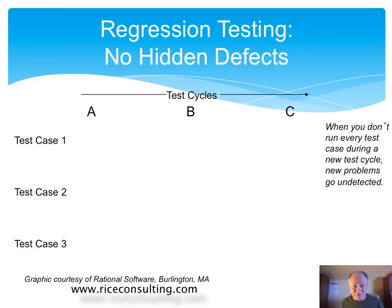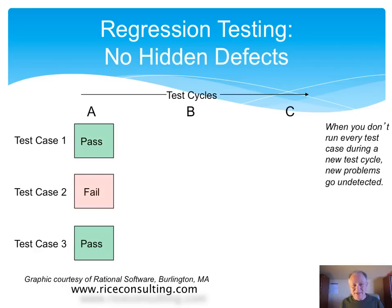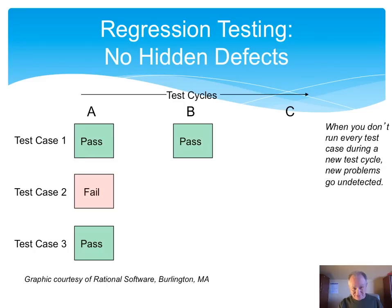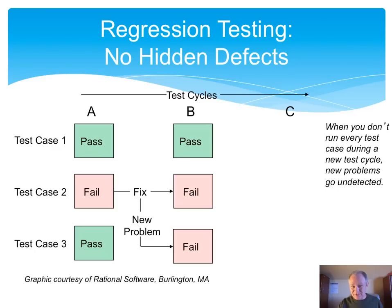Now let's take a contrasting picture of where we are doing regression testing. We have the same basic scenario — three test cases. In the first cycle of testing, we test all three and have the same situation: a pass, a fail, and a pass. In the second cycle, we retest test case one as a regression case, and it passes — a good verification. Test case two was supposed to be fixed, but we learn it's not. And we test test case three as well, and now we pick up on the regression defect.